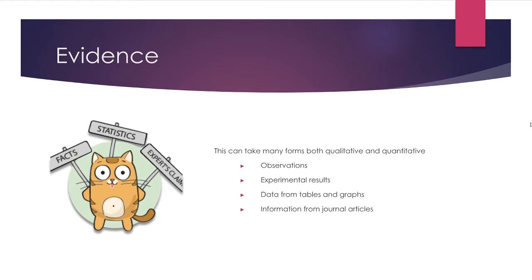Evidence takes all sorts of forms, and it can come in two types: qualitative and quantitative. Quantitative means that it's got a quantity associated with it — there's usually numbers. And because it's science class, there are also going to be units with those numbers. Qualitative data is more descriptive, so colors or things like that. We end up looking at things like observations, results of our experiments, data from tables, info from journals. There's lots of stuff that we're going to bring in as evidence.